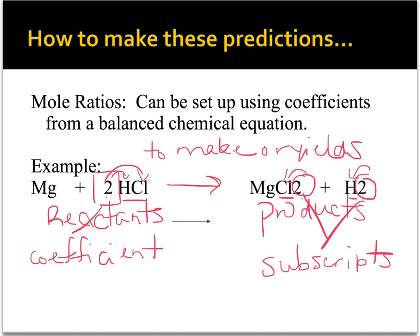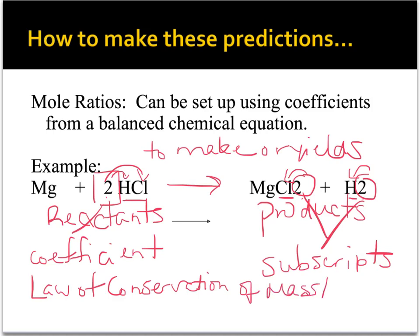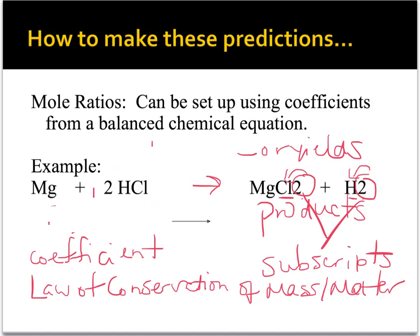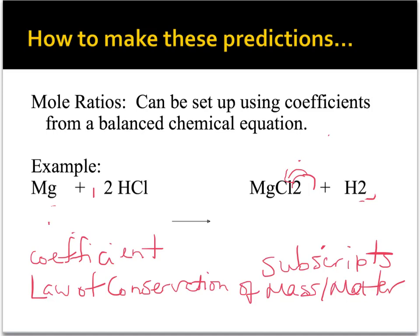Chemical equations are written — or rather, balanced chemical equations are written — to follow the law of conservation of mass and matter. That law says that what goes into a reaction has to come back out. You're not losing atoms or mass, in spite of the fact that they're getting rearranged. So when I look at this equation and try to use mole information, the law of conservation of mass and matter is our guiding force.